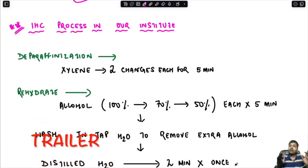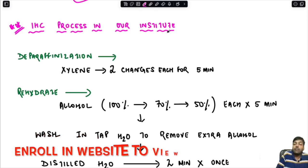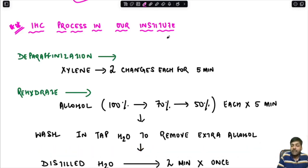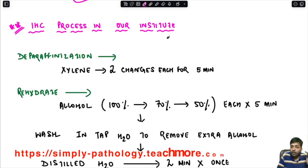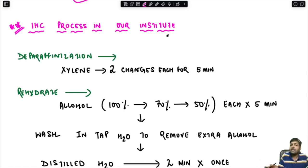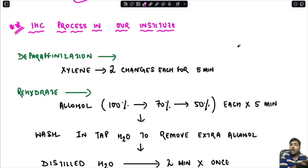I am going to discuss in detail about the IHC process which is carried out in our institute and the basic steps. Remember one very important thing: the process carried out in your institute might vary from what is carried out in our institute. It varies from place to place, country to country, and even between different colleges in the same state, each may have different protocols. This is the one we follow in our institute — you have to write the process that you follow in yours.